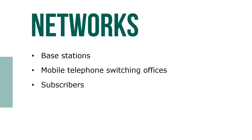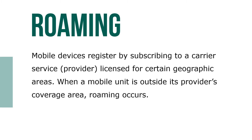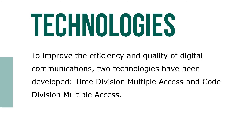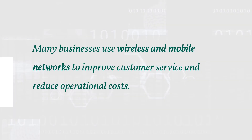Wireless WAN networks include base stations, mobile telephone switching offices, and subscribers. Mobile devices register by subscribing to a carrier service licensed for a certain geographic area; when a mobile unit is outside its provider's coverage area, roaming occurs. To improve the efficiency and quality of digital communications, two technologies have been developed: Time Division Multiple Access (TDMA) and Code Division Multiple Access (CDMA). Many businesses use wireless and mobile networks to improve customer service and reduce operational costs.